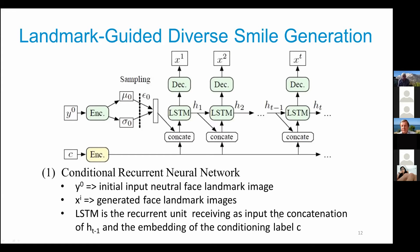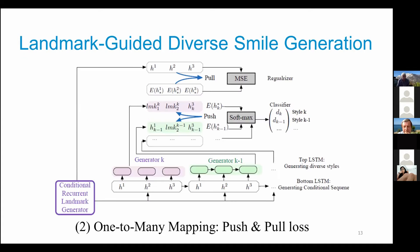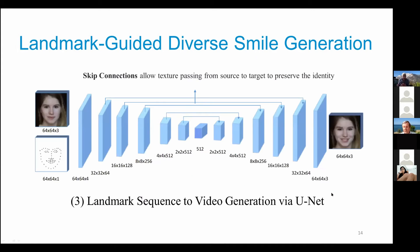In the conditional recurrent network, we start with initial input y0 — the neutral landmark image — then generate different examples using an LSTM. The input at each step is the concatenation of the previous stage and the embedding of the conditional label. We use a push-and-pull loss with two LSTMs: the top LSTM generates diverse styles, and the bottom one generates conditional sequences. Finally, skip connections allow texture passing from source to target to preserve identity, enabling texture mapping to generate the face corresponding to the landmark.